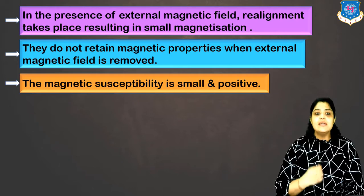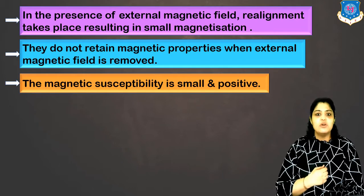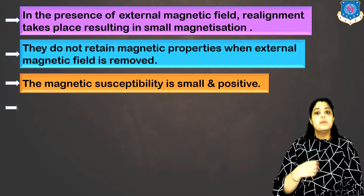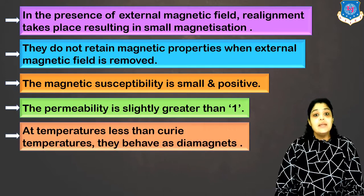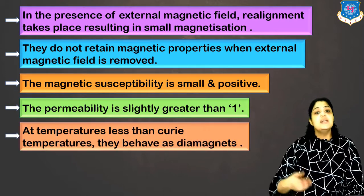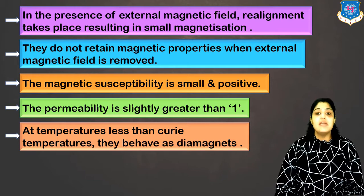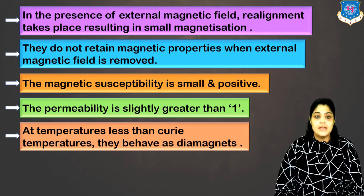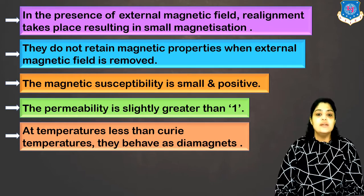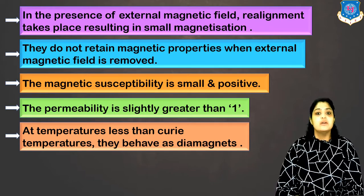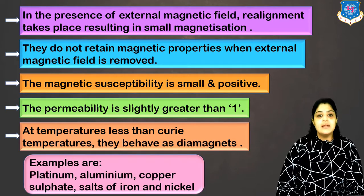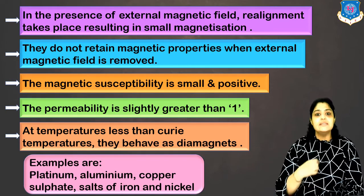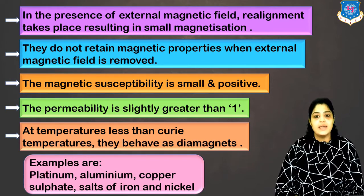The magnetic susceptibility is small and positive — positive but with a very small value. Permeability is slightly greater than 1. At temperatures which are less than the Curie temperatures, they can behave as diamagnets, again due to the random orientation of dipoles. Some examples are platinum, aluminum, copper sulfate, and some salts of iron and nickel.